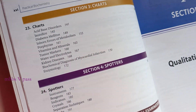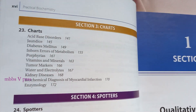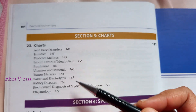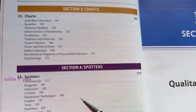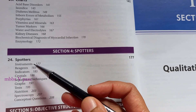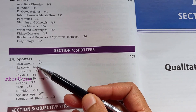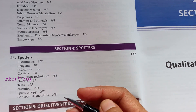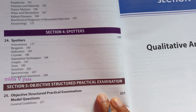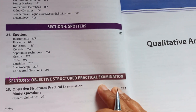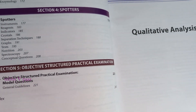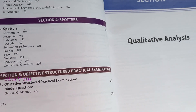They are saying that there are some charts for you. Let's look at these and then spotters — so many spotters: instrument spotters, reagents, indicators, crystals, graphs, tests, nutrition, spectroscopy, etc. So let's look at this book here and there.